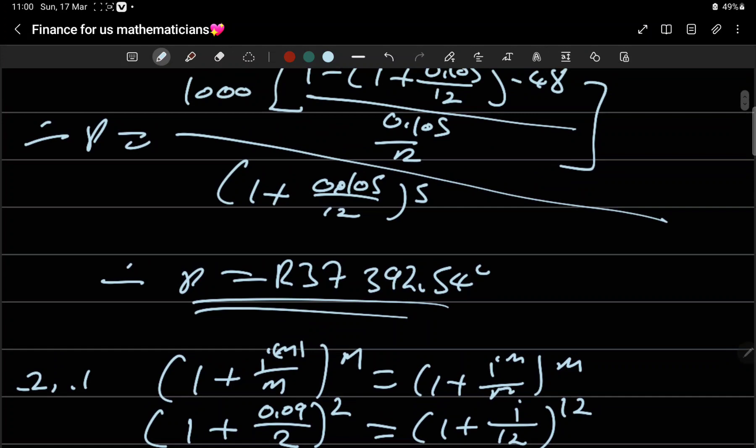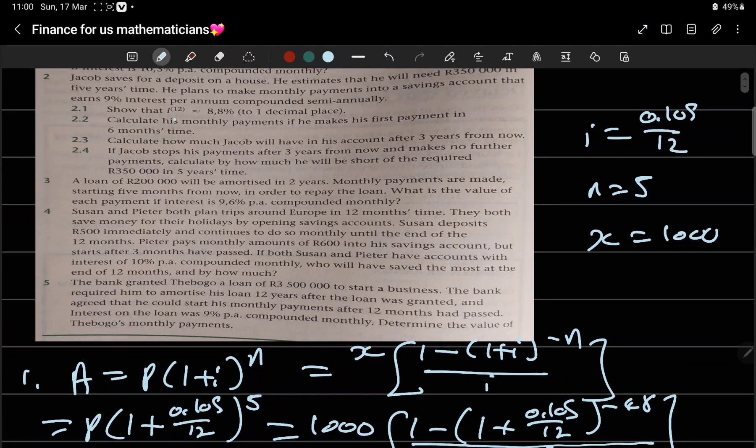Then 2.4, I still have time. If Jacob stops his payment after 3 years now and makes no further payment, calculate how much will be short of the required 150,000 in 5 years.